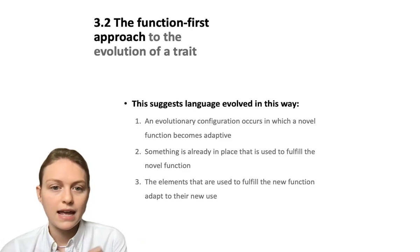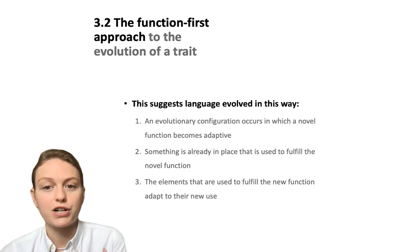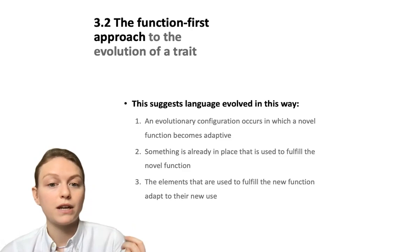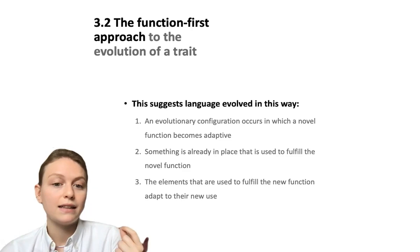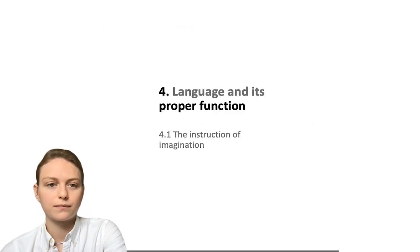Altogether, this suggests that language evolved in this way. First, an evolutionary configuration occurs in which a novel function becomes adaptive. Second, something already in place is used to fulfill the novel function. Third, the elements used to fulfill the new function adapt to their new use.